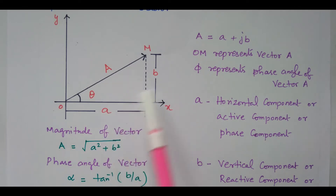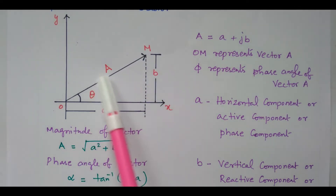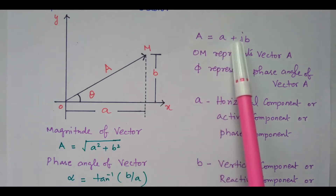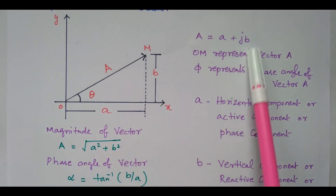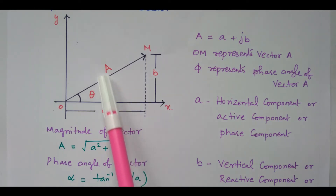The vector sum of A and B is nothing but the resultant vector m with a magnitude of A. A is the vector sum of small a and b: A equal to a plus b. A is available in the x-axis, the real axis. B is available in the y-axis, that is called the imaginary axis. The sum of these two is the resultant vector A.